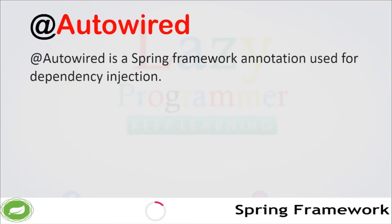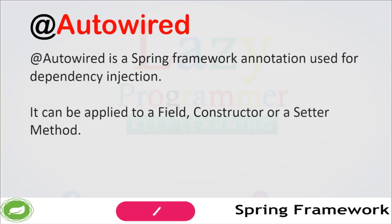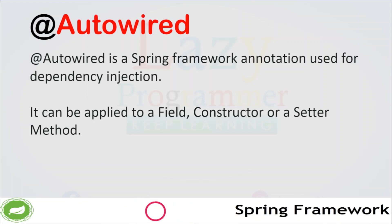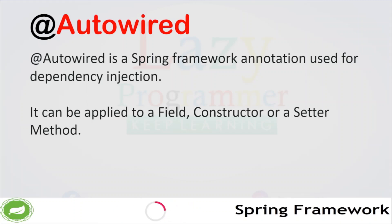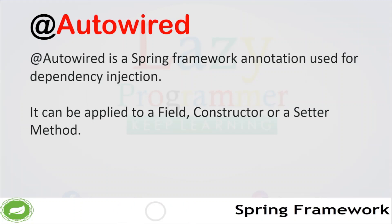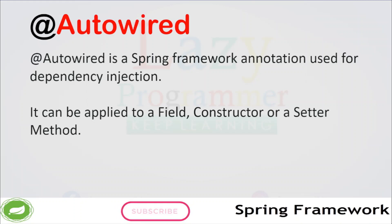Now let's see how we can use the @Autowired annotation. @Autowired is a Spring Framework annotation used for dependency injection. It is used to specify that a particular member variable, constructor, or setter method should be automatically wired with the bean from the application context or the Spring IOC container. The process of wiring beans using annotation is called auto wiring, and the beans wired this way are referred to as auto wired beans.